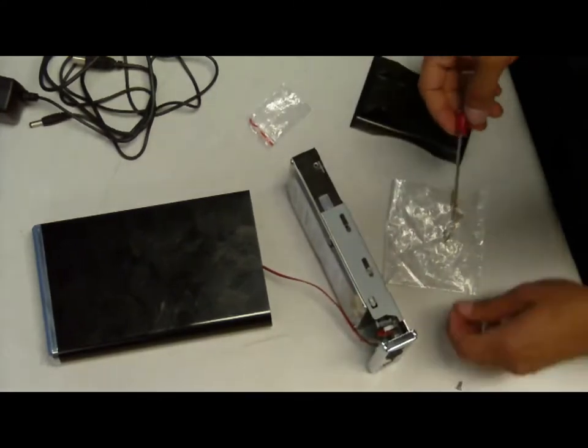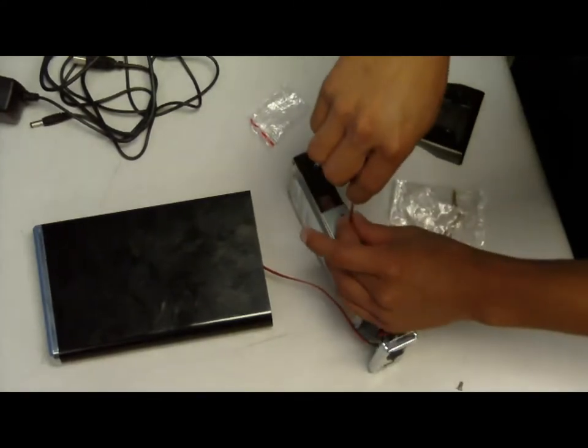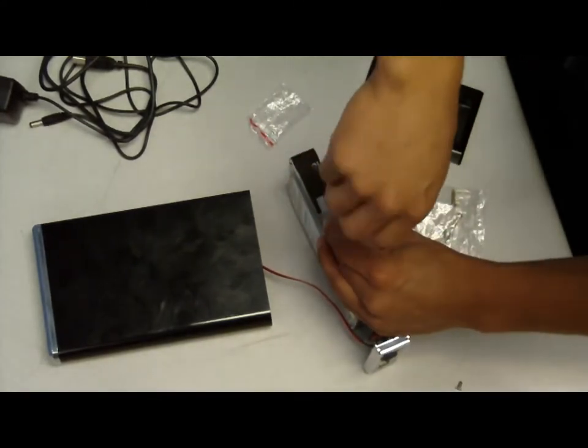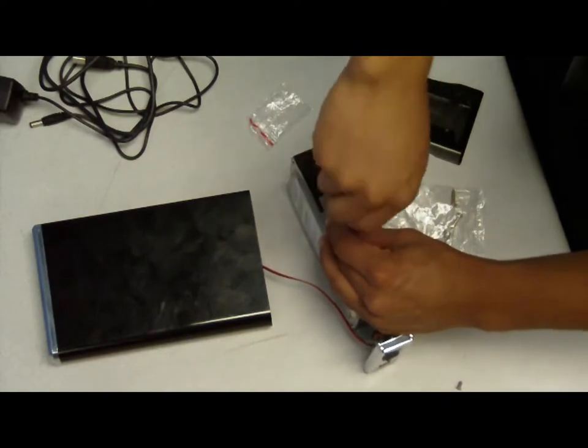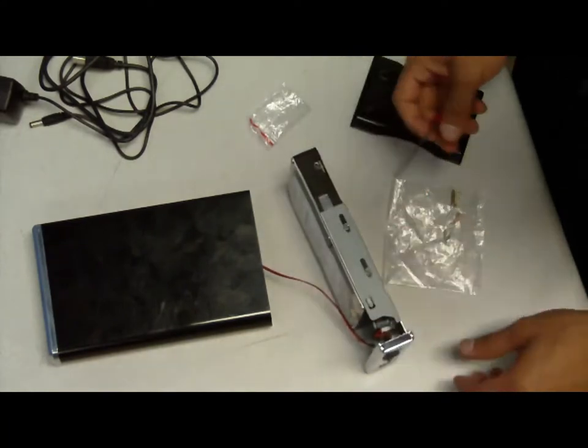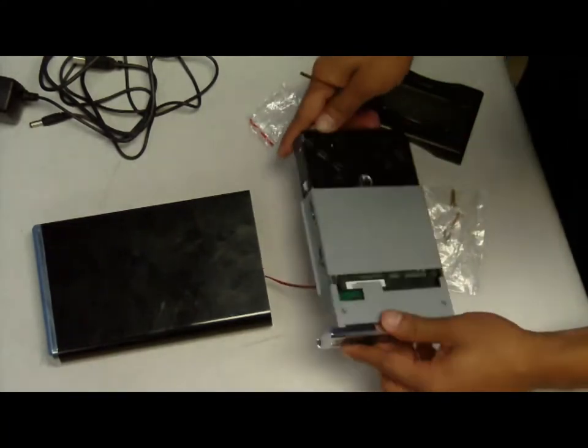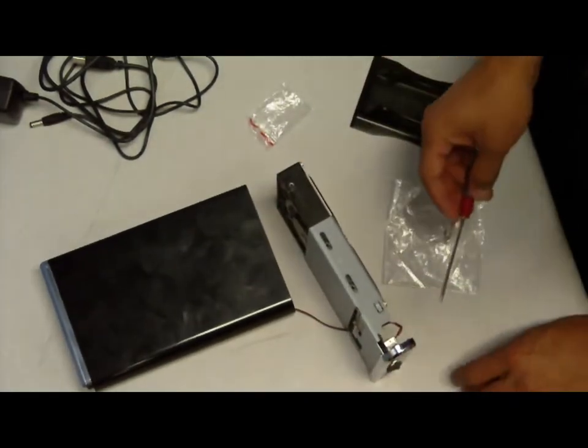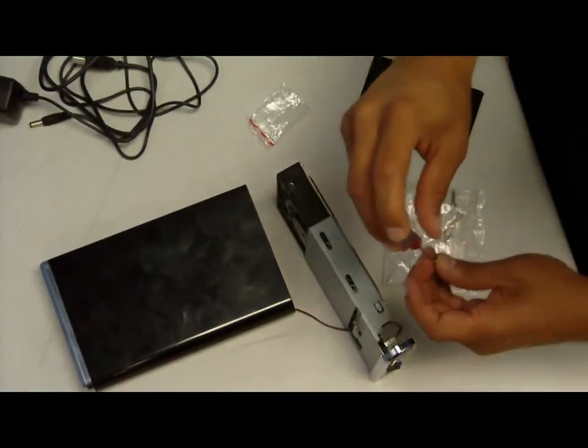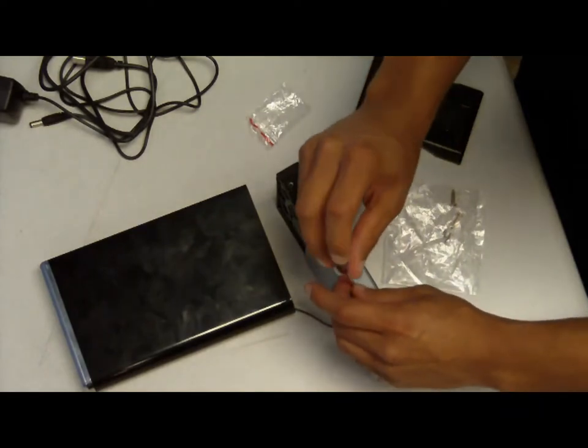You'll end up using four screws, two on each side. And this is to hold the hard drive in place, that way it's not moving around in the enclosure. So go ahead and flip it and apply two screws there.